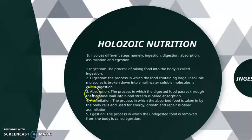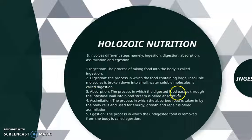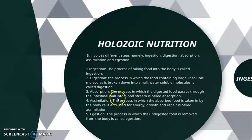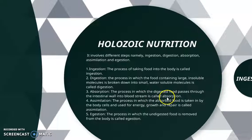The third process is absorption. It is the process by which the digested food passes into the intestinal walls, where blood is present, and the nutrients are passed into the bloodstream. That process is called absorption.